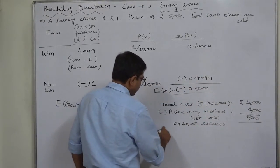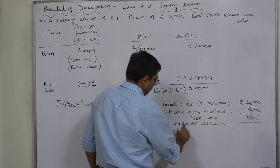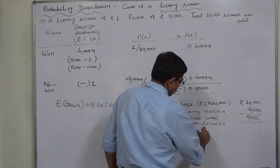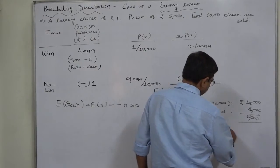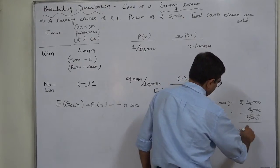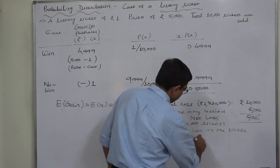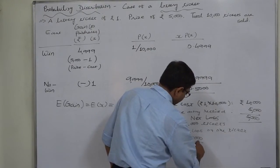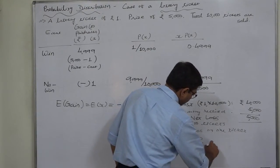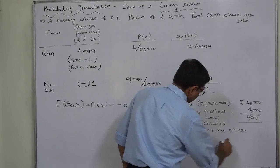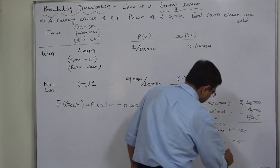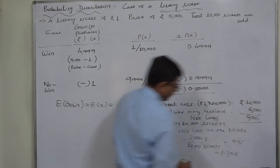So average net loss on one ticket will be 5,000 rupees divided by 10,000 tickets. So it comes to 0.5, since it is loss, we use negative sign.